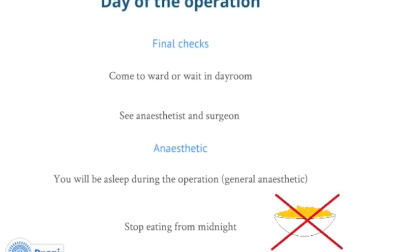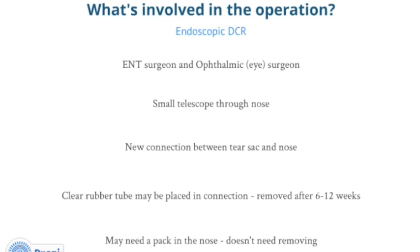On the day of your operation you will come into the freedom unit in the morning, and your surgeon will go through the operation one last time. You will be asked to wait in the waiting room until called for your operation. Your surgery will be carried out under general anaesthetic, meaning you will be asleep during the operation. You will be asked to stop eating and drinking from midnight on the day of your operation.